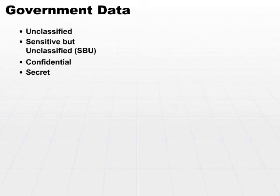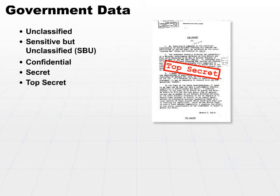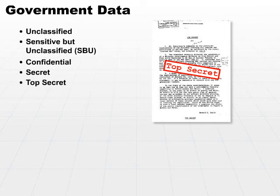Last but not least is top secret. Top secret is more secret than secret — it's an elevated security label indicating that this information can only be viewed by the absolute top echelon of information gatherers or users. You must have a top secret clearance and a need to know. There is actually one level higher than top secret, which is for the president's eyes only, representing a clearance above top secret.